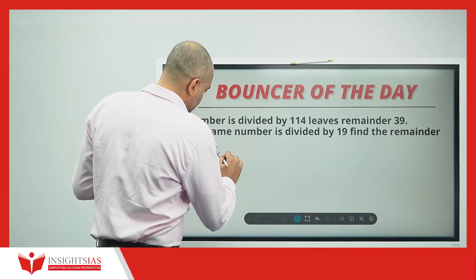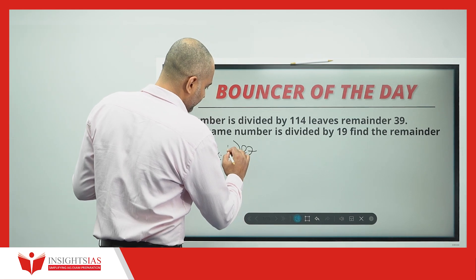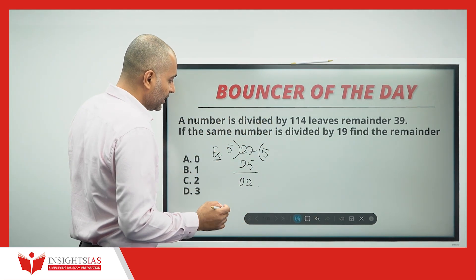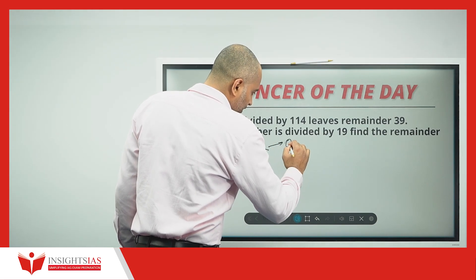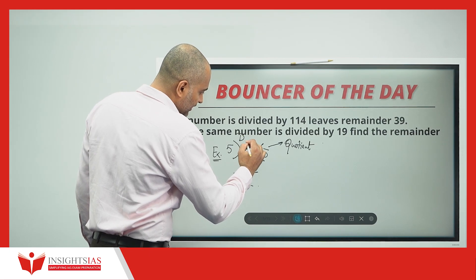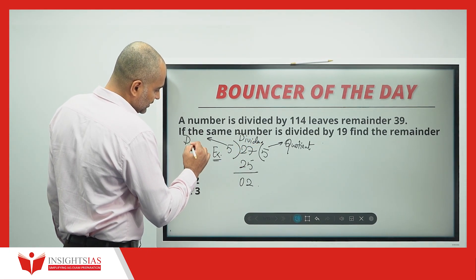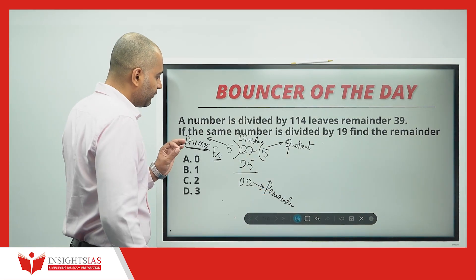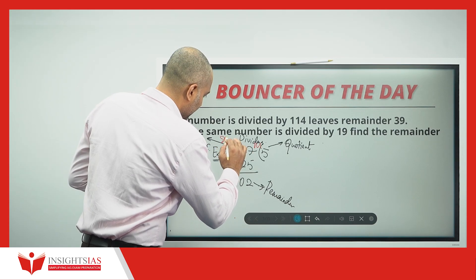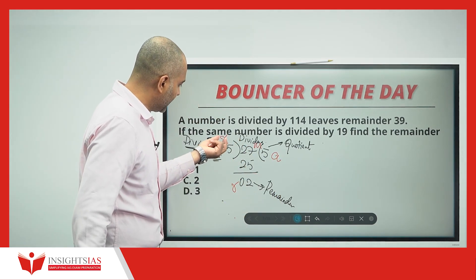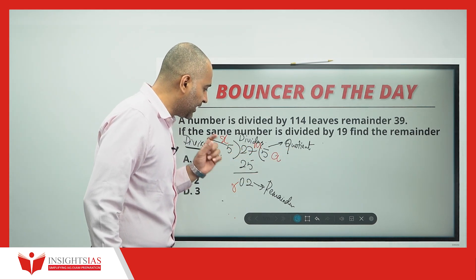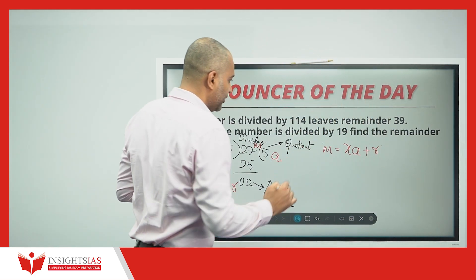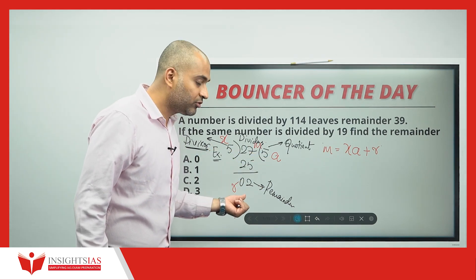Now, look here. For example, when I divide 27 by 5 using the normal long division method — this is called the quotient, this is the dividend, and this is the divisor. The divisor is also called a factor, and this is the remainder. If I consider m as the dividend, x as the divisor, a as the quotient, and r as the remainder, I can write m = x·a + r. So 5×5 = 25 plus 2 equals 27.